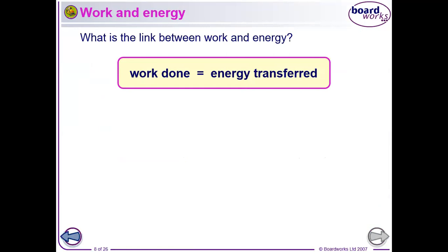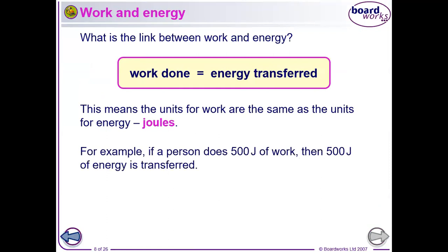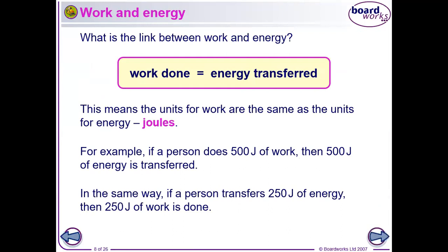Work done is actually energy transferred. This means the units for work are the same as the units for energy: joules. If a person does 500 joules of work, then 500 joules of energy is transferred. In the same way, if a person transfers 250 joules of energy, 250 joules of work is done.